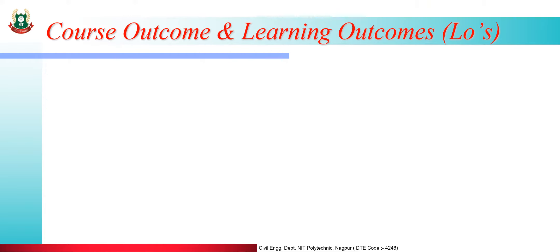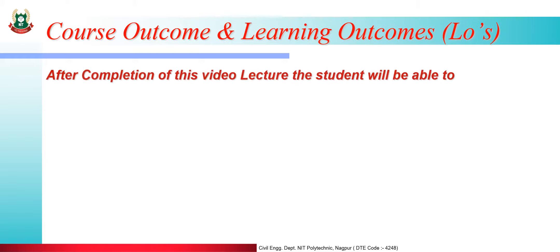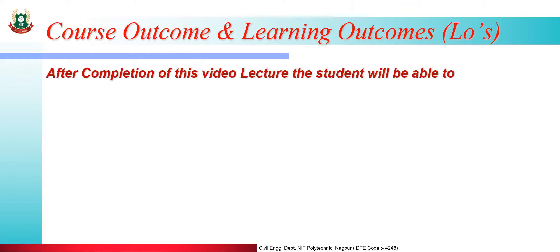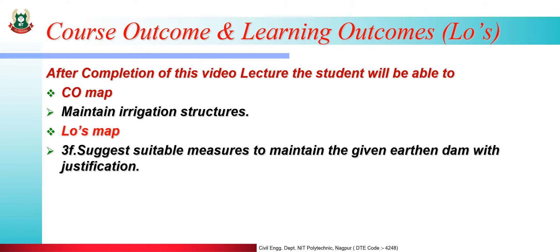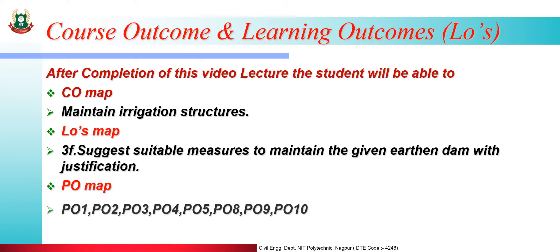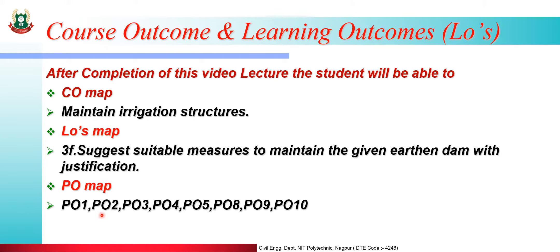Now in this lecture, after completion of this video lecture, the student will be able to CO Map: Maintain Irrigation Structures. LO Map 3F: Suggest suitable measures to maintain the given Earthen Dam with justification. PO Map: PO1, PO2, PO3, PO4, PO5, PO8, PO9, and PO10.